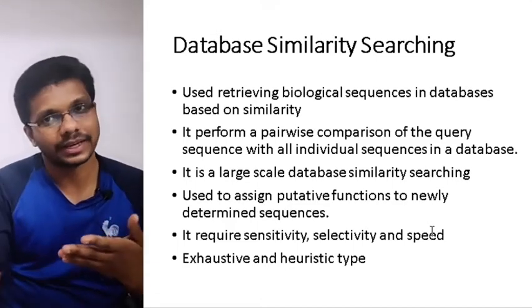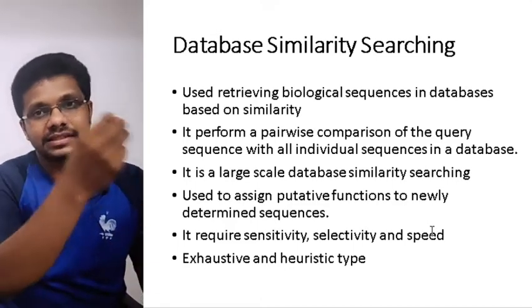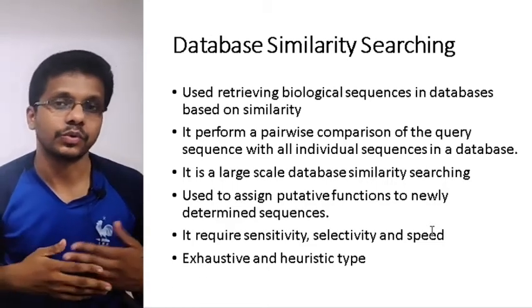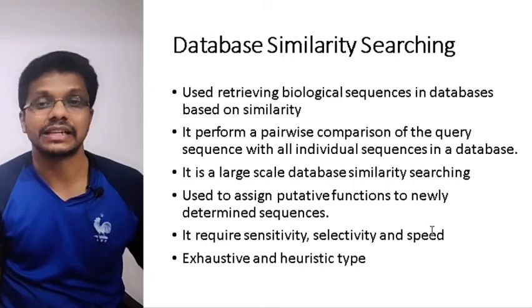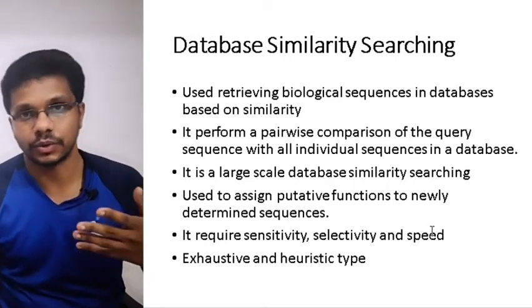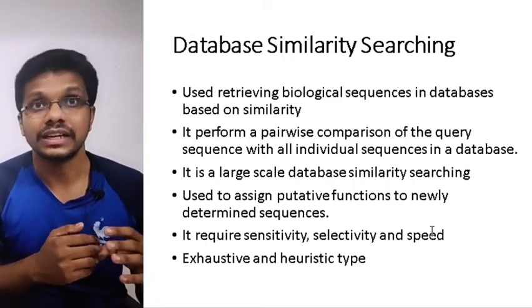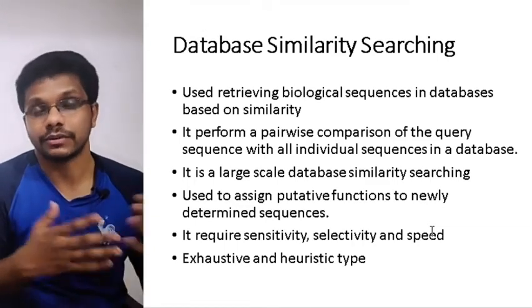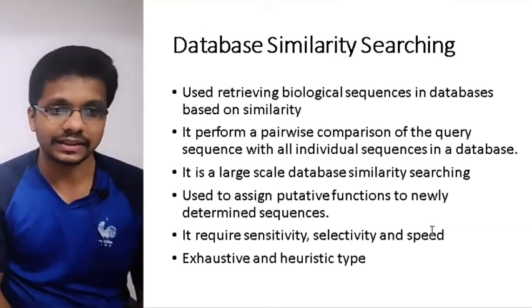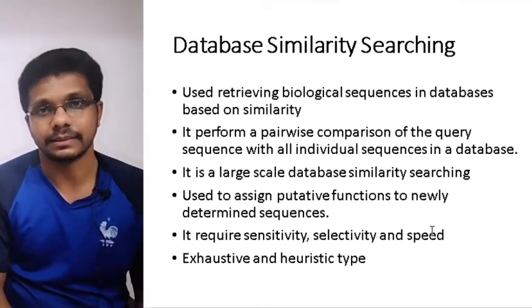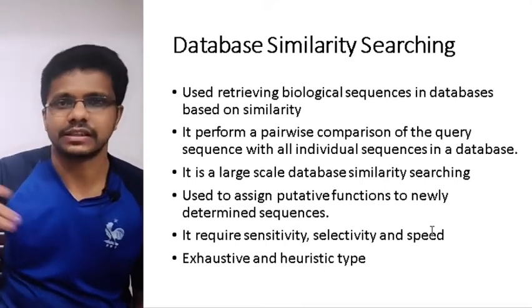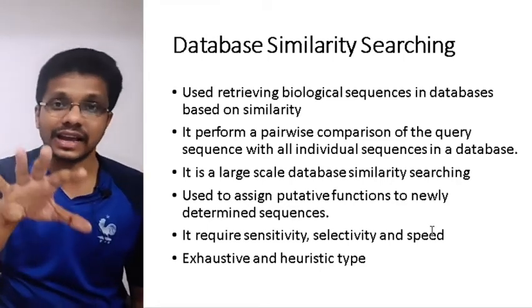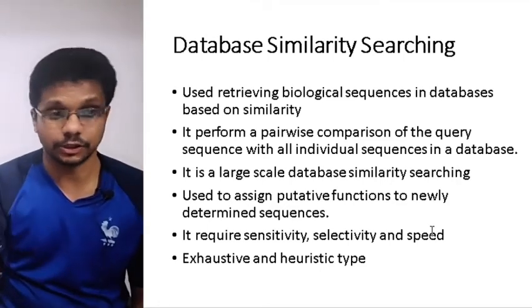Similarly, if you find a new plant, you can take a portion of its DNA and do a similarity search in the database. If something similar is found, it means the organism already exists and somebody has worked on it. If the DNA is very unique, it may mean you have found a novel species. All types of databases — primary, secondary, and specialized — have database similarity searching tools.